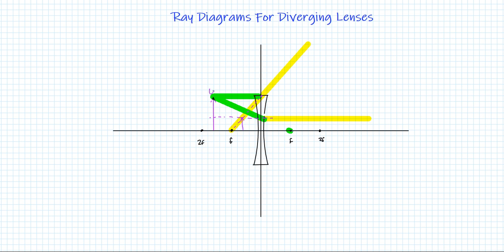So my object was originally placed at this position and my image is now going to form on the same side as the object and it's a virtual image meaning that I'm not going to be able to see this image projected onto something else.